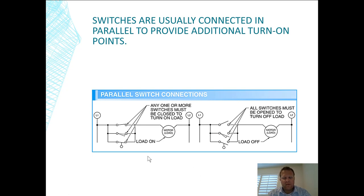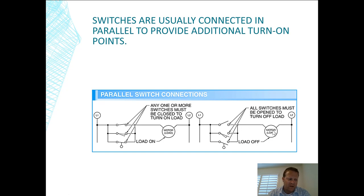Looking at switches in parallel — any one or more switches must be closed to turn on the load. In this example, for the motor to turn, one of these switches needs to be closed. If all the switches were open, you couldn't get electricity through. Having one closed allows electricity through. These are all in parallel.